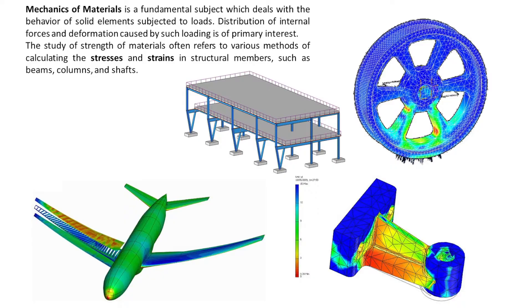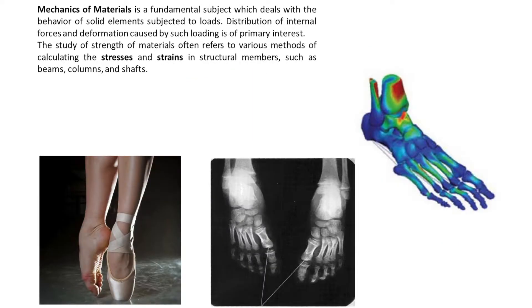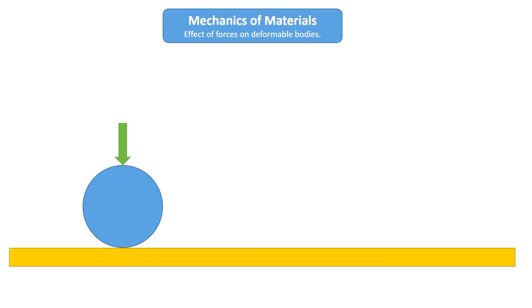We have learned so far that mechanics of materials studies the internal effects of forces acting on a body, including the internal distribution of the forces and the internal deformation caused by the forces. In order to evaluate the effects of forces within a body, appropriate physical quantities should be defined to measure the internal forces and deformations.